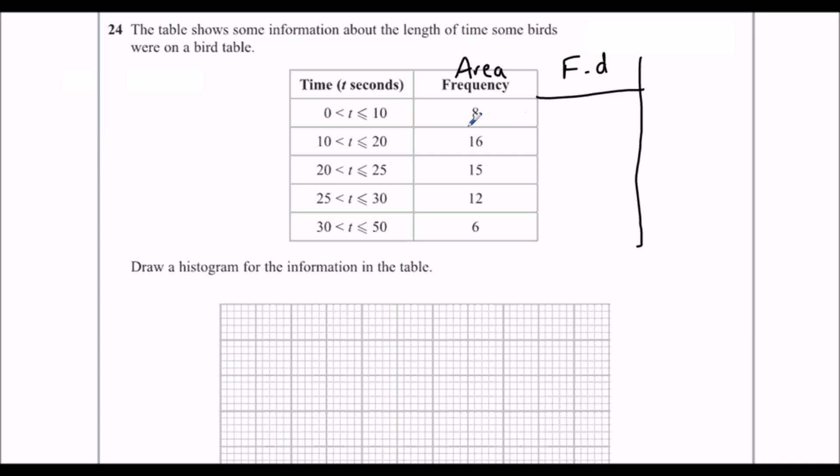So if the area is 10, I mean the area is 8 and it's 10 wide, 0 to 10 is 10. So the frequency density, the height is going to be, I'll write frequency density. We're going to take our frequency and divide it by the width of the class. So 8 divided by 10. Again, we can use the calculator because it's a calculator paper.